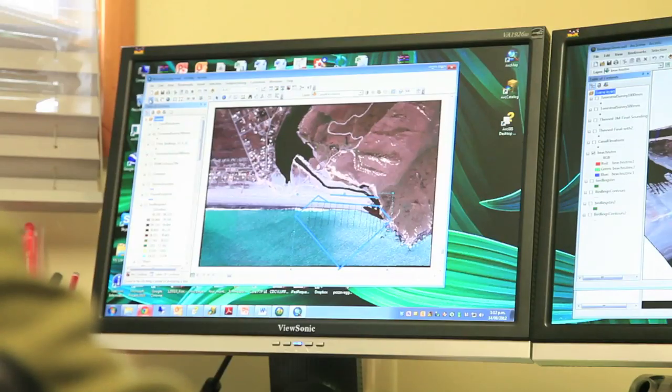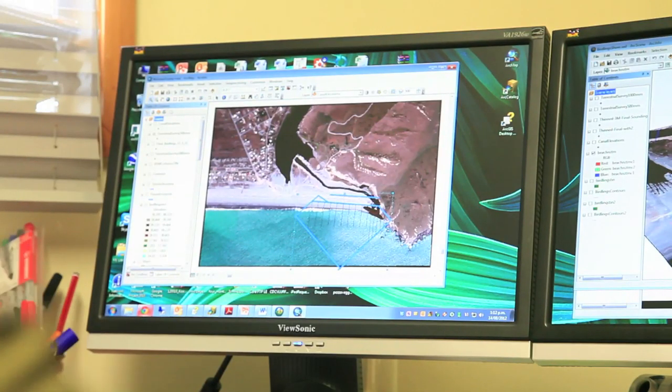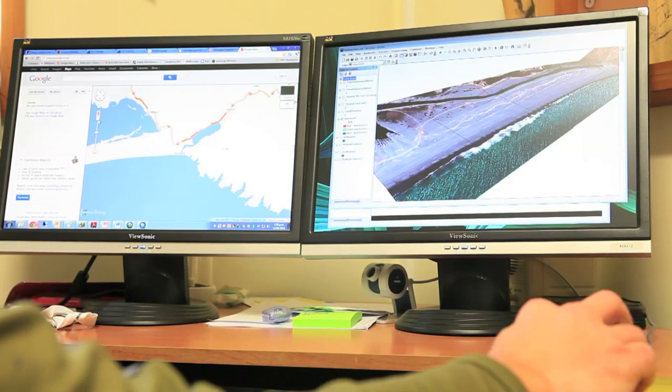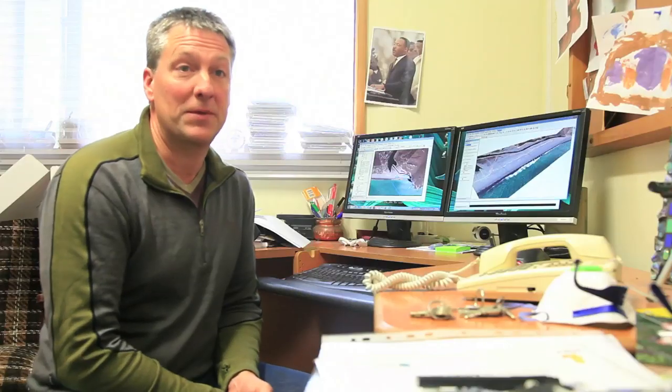I deal a lot with spatial data and GIS and how we use technology to simulate real-world problems. And one in particular that I've been working with for the past couple of months is with Lake Forsyth, Wairewa, which is out towards Little River on Banks Peninsula.